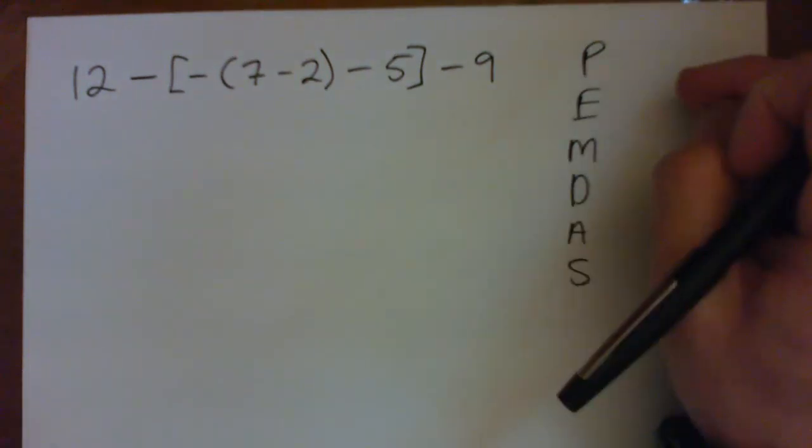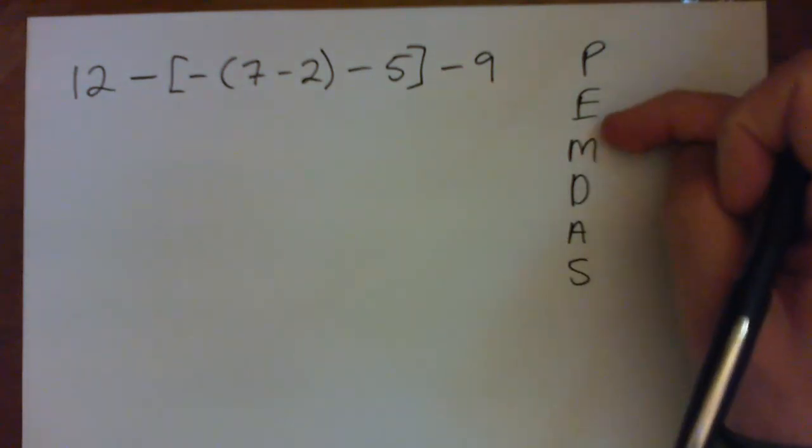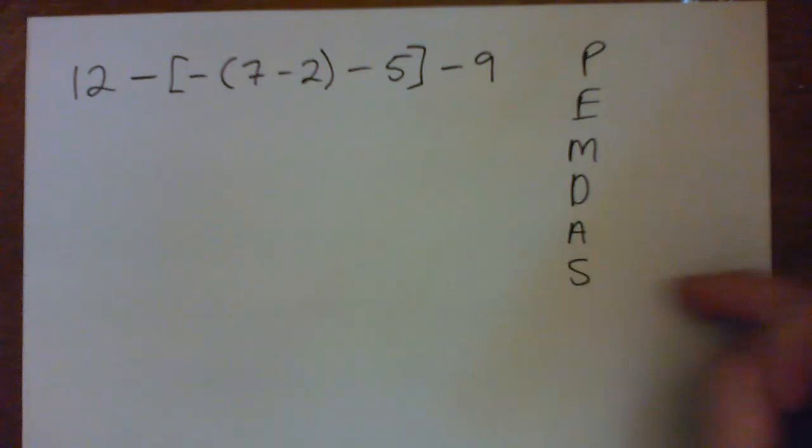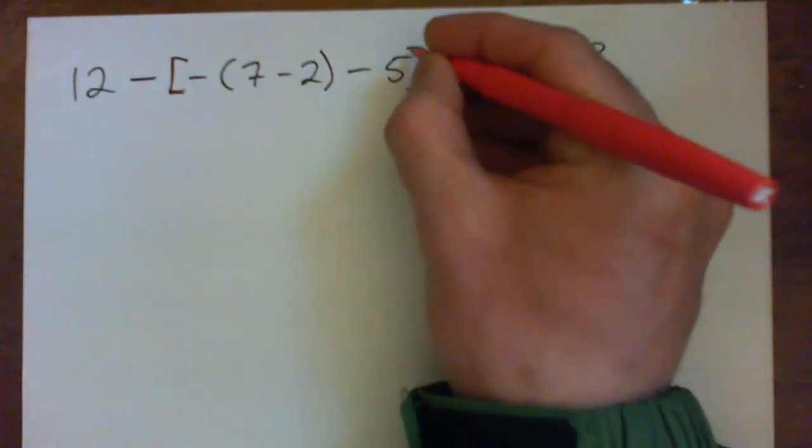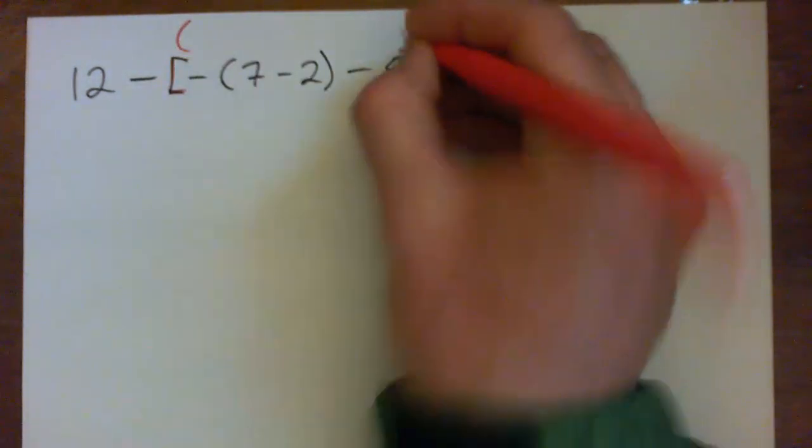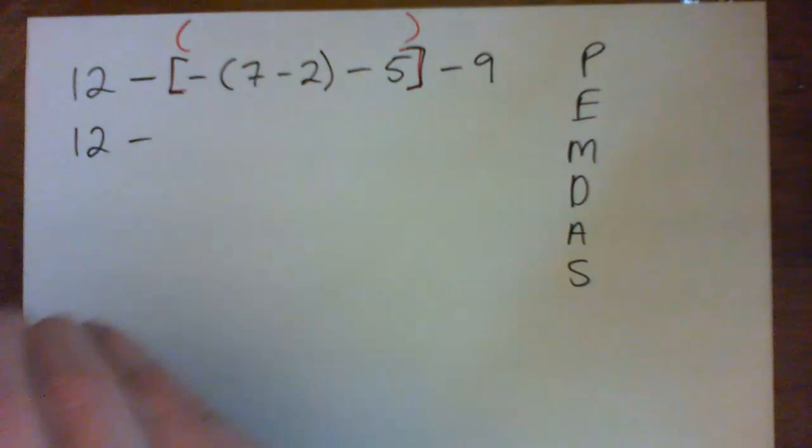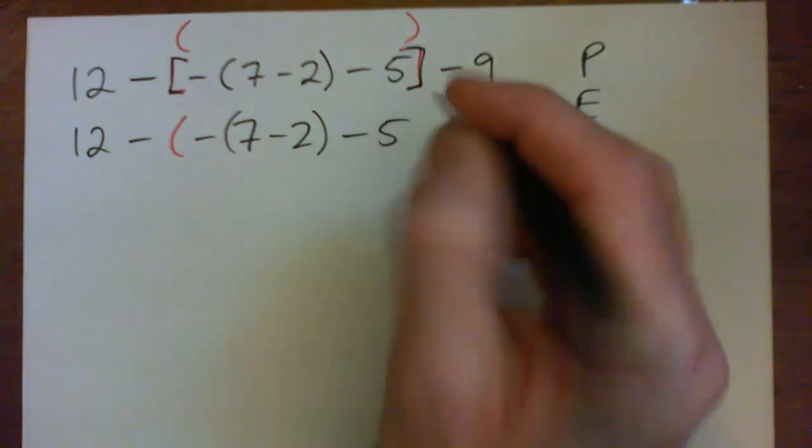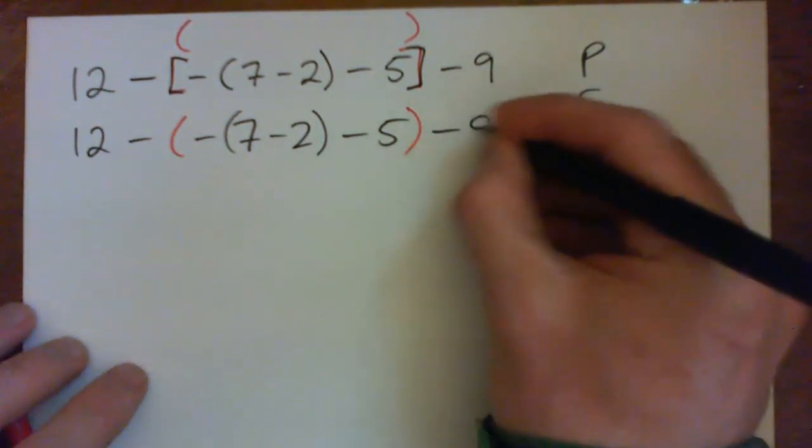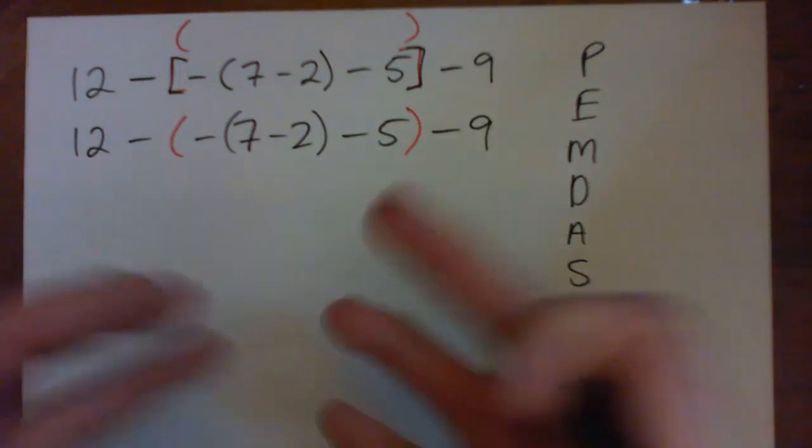We've got lots of subtracting going on and we've got some parentheses going on. So parentheses, exponents, multiply or divide from left to right, add or subtract from left to right. First of all, remember a square bracket is just like a parentheses. You could just put parentheses there if you want to, it means the same thing. A square bracket doesn't mean anything peculiar. I'm just going to write it in just for the fun of it because square bracket doesn't matter, it's just another type of parentheses.